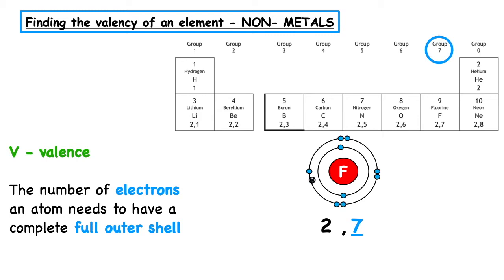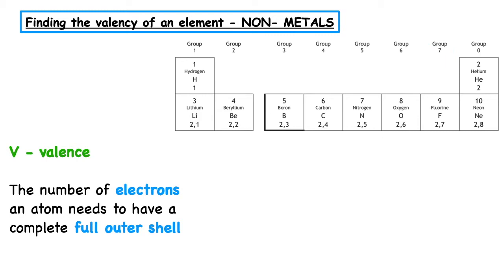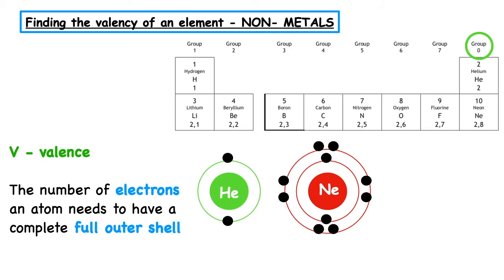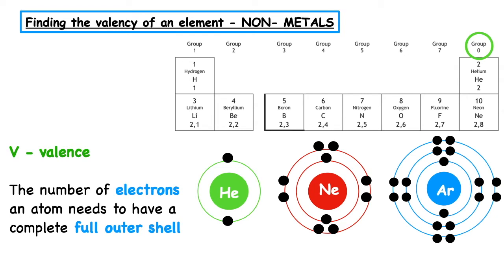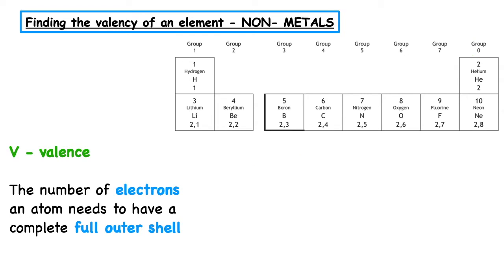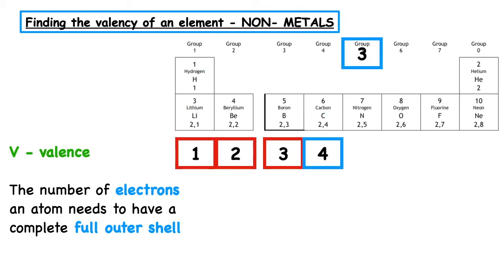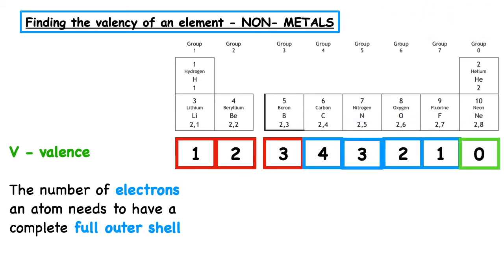That brings us to the last group, which could be known as Group 0 or Group 8. These are a special block in the periodic table known as the noble gases. The noble gases don't form bonds because they already have a full stable outer electron shell — this is the electron arrangement all other elements are trying to achieve. The way I remember the valencies going from Group 1 to Group 0 is using a little song: 1, 2, 3, 4, 3, 2, 1, 0.